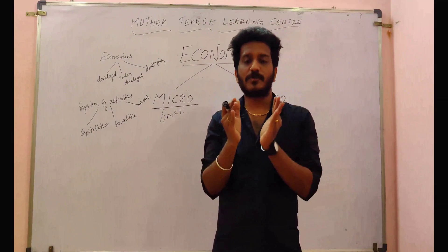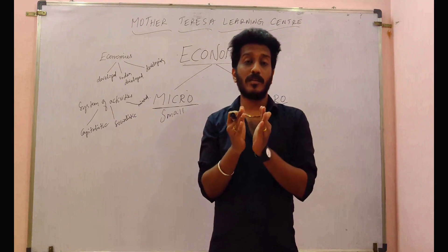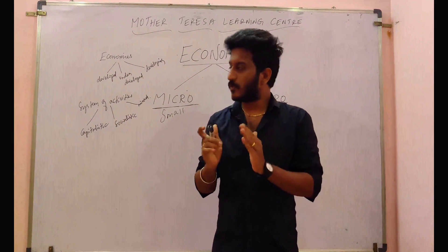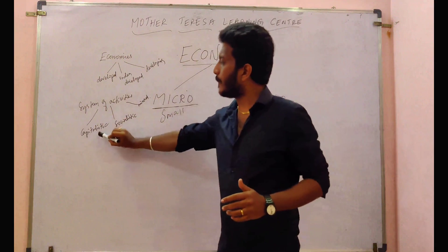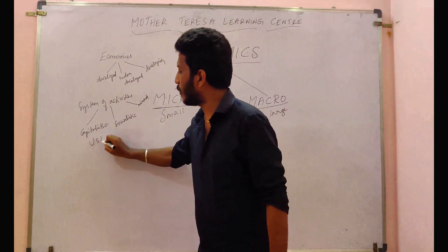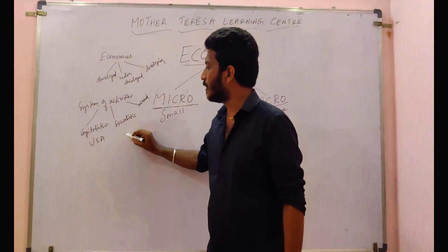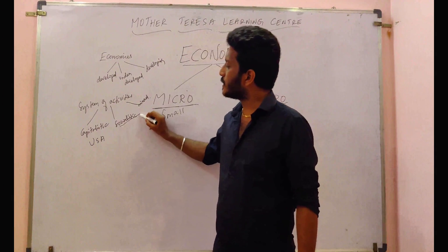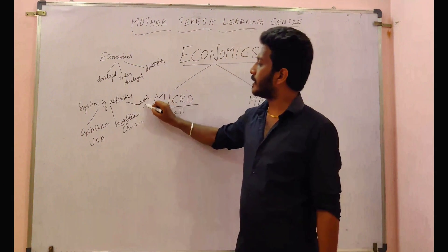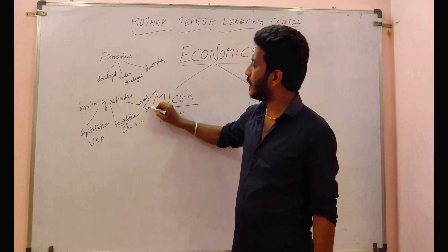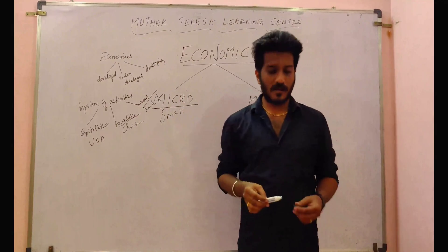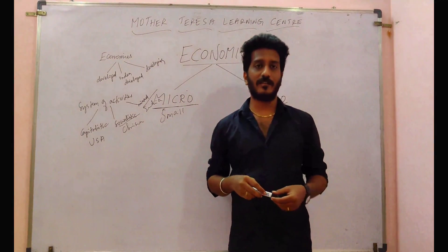These three types of economies play a major role in this world. Talking about capitalist economy, this is established and going on in USA. Socialistic economy is prevalent in China, and mixed economy is prevalent in India. I think these three examples are very best to remember the system of activities.